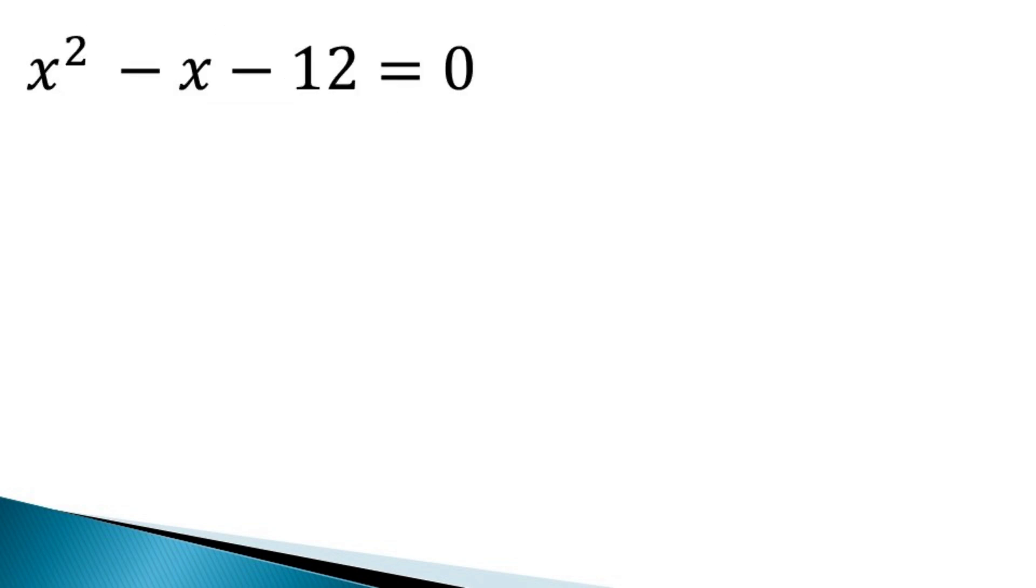To factorize this equation, write it as x square minus 4x plus 3x minus 12 is equal to 0.